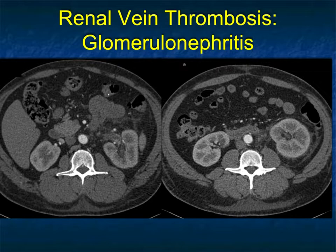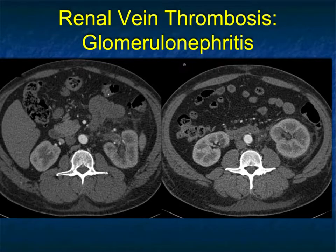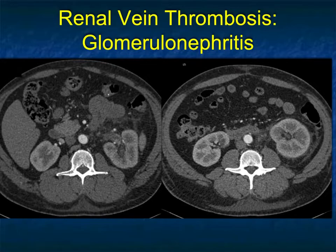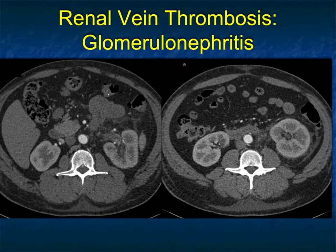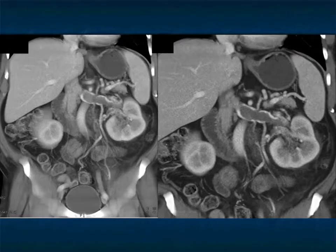One of the things you typically see with renal vein thrombosis is persistent corticomedullary differentiation, as seen here in the left kidney. You'll also see stranding around the kidney, and when you look carefully, the presence of thrombus. It can be seen in the arterial phase, and in tumors — particularly clear cell with renal vein involvement — you may see increased vascularity. Essentially every other cause of renal vein thrombosis is going to be hypodense.